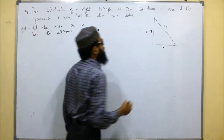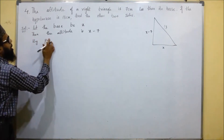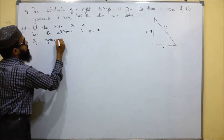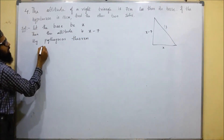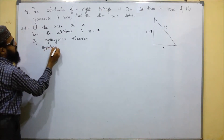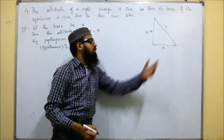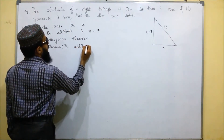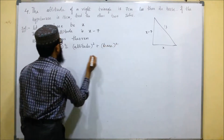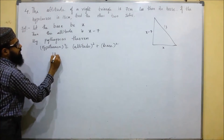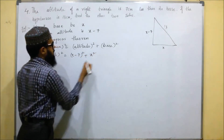Now we know the Pythagorean theorem. By the Pythagorean theorem, hypotenuse squared equals altitude squared plus base squared. The hypotenuse is 13, so 13 squared equals (x minus 7) squared plus x squared.